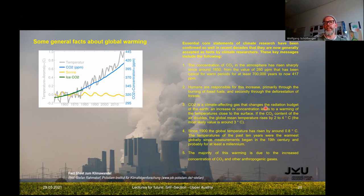These key messages include the following: The concentration of CO2 in the atmosphere has risen sharply since around 1850 from the value of 280 to 420 ppm. Humans are responsible for this increase, primarily through the burning of fossil fuels and building up industry on this, and secondly through deforestation of forests. CO2 is a climate-affecting gas that changes the radiation budget of the earth. An increase in the concentration leads to a warming of the temperature close to the surface. If the CO2 content of the air doubles, the global mean temperature rises by two to four degrees Celsius. The most likely value is around three degrees.